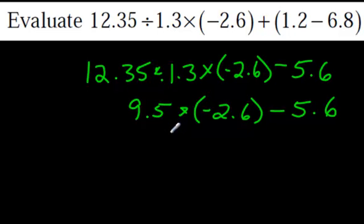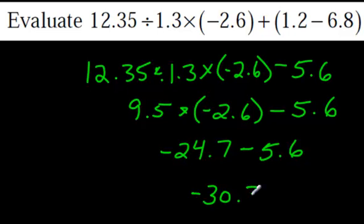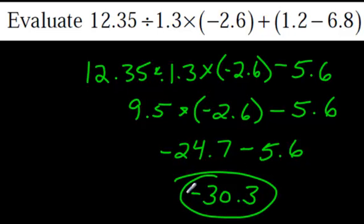Okay, anyway. So, 9.5 times negative 2.6, and I've got negative 24.7 minus 5.6. Now, I'm just going to put those together on my calculator. So, negative 24.7 minus 5.6. My final answer is negative 30.3. Cheers.